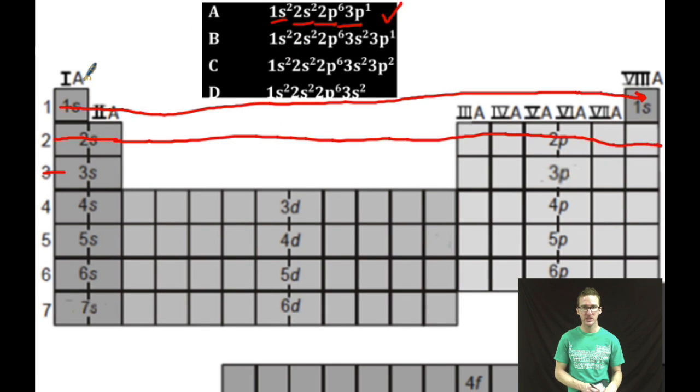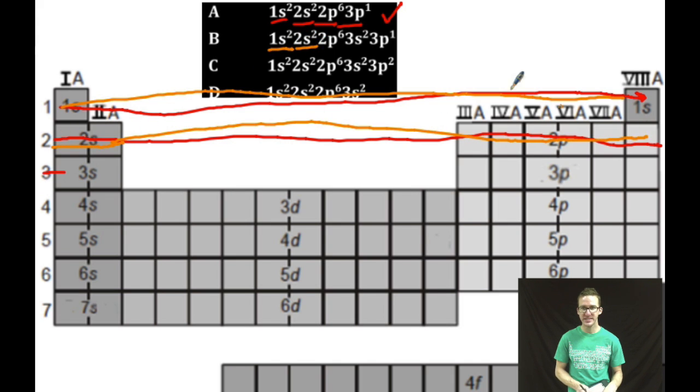As you check out the other ones, 1s2, check. 2s2, check. 2p6, check. 3s2, check. 3p1, check. Follows the Aufbau principle lowest to highest ground state.